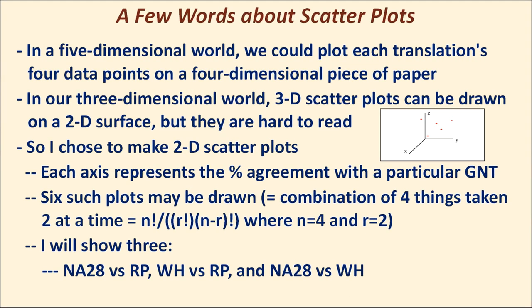Now, a few words about scatter plots. We live in a three-dimensional world, so it's easy to draw a two-dimensional XY scatter plot on a flat piece of paper. If we lived in a five-dimensional world, we could plot each translation's four data points on a four-dimensional piece of paper — but unfortunately we can't. We can draw 3D scatter plots, but those are very hard to read; it's hard to judge exactly where a point floating in space intersects the different planes. So I chose to make 2D scatter plots, where each axis represents the percent agreement with a particular Greek New Testament.